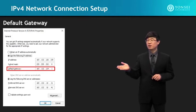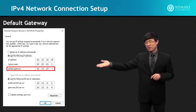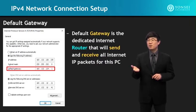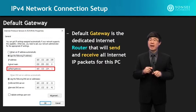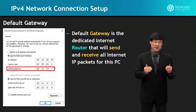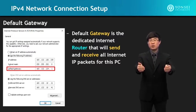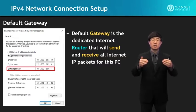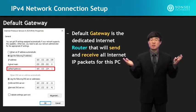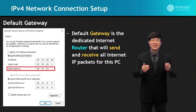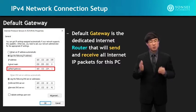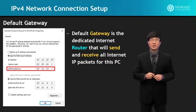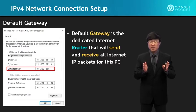Next, we look at the default gateway. The default gateway address is listed in the window. The default gateway is the dedicated Internet router that will send and receive all Internet packets for this PC. If you know your PC's setup and how your default gateway is set up, your connection to the Internet is completely explained through this. Knowing this makes you very powerful when it comes to your TCP/IP knowledge.